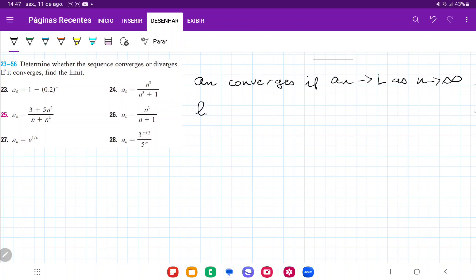So what we have to do here is we have to take the limit as n approaches infinity of 3 plus 5n squared over n plus n squared and see if that gives us a number. Because if it gives a number, then the limit exists and so it converges.